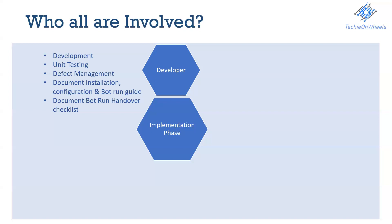Once the entire code is developed, the bot is ready. In parallel, the developer also works on documentation. The documentation involves installation, configuration, or the bot run guide, which is going to be used in the future or while transitioning from developer to the support team. All these documents run in parallel while the developer builds or encounters any scenarios which need to be captured carefully.